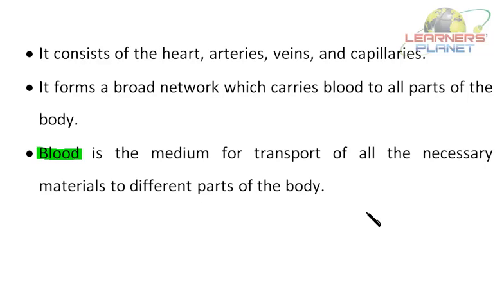Absorptive structures such as gills, lungs, and the alimentary canal have a high surface area to volume ratio. They are permeable to substances which pass through them and are kept moist with rich supplies of transport tissues like blood. In plants, the transportation medium is cell sap, water, and minerals. The transport system in plants consists of xylem and phloem, while in humans there are blood vessels — arteries, veins, and capillaries.